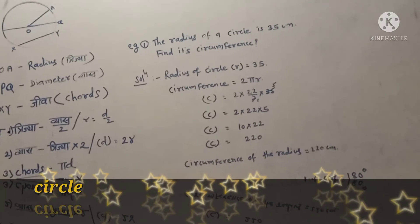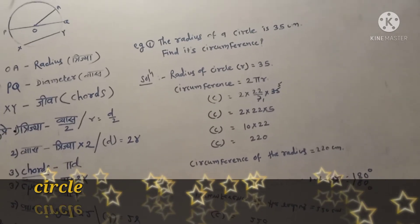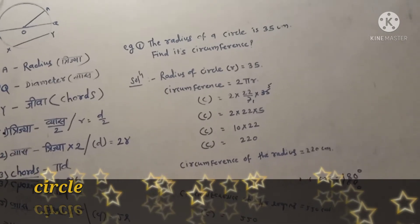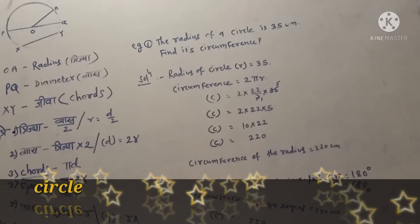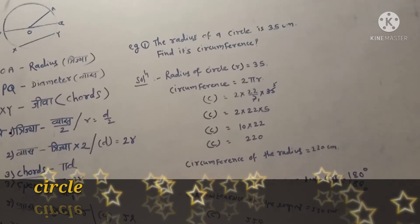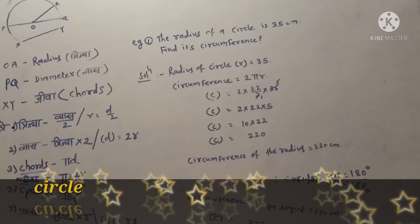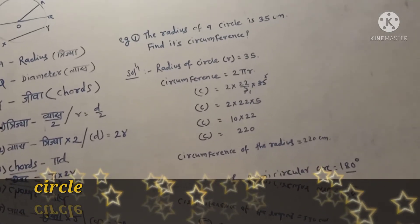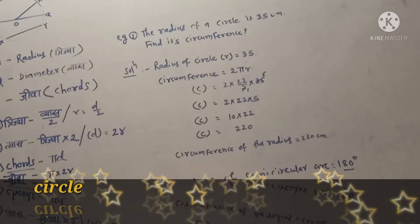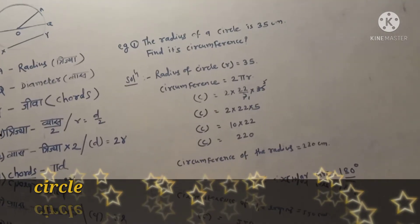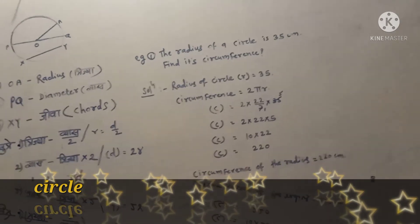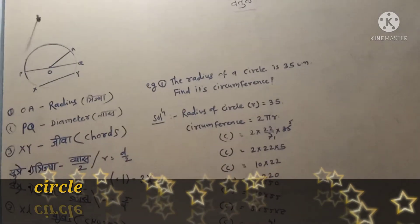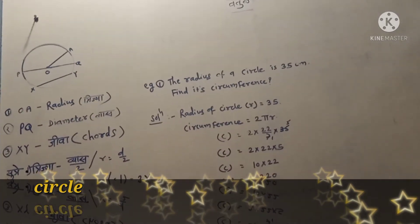The radius of the circle is 35 cm. Find its circumference. This is the example to solve. The radius of the circle — trija — is 25 cm. Find its circumference, meaning find the parigat (perimeter) of the circle. This is the question.